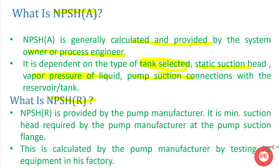NPSH available is given by the end product user or process design engineer. NPSH required is provided by the pump manufacturer. It is the minimum suction head — mark that — minimum suction head, because this is the minimum pressure required at the suction port to avoid cavitation. NPSH required is generally calculated by the pump manufacturer by testing equipment in the factory, and these values are fixed for a family of pumps.